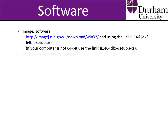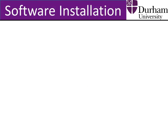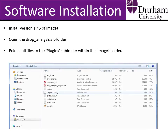You will also require the drop analysis plugin for ImageJ, which was developed by Aureline Stadler from the Biomedical Imaging Group of École Polytechnique Fédérale de Lausanne. It can be sourced from this website in the dropanalysis.zip folder in the right-hand column of the webpage. Having downloaded version 1.46 of ImageJ, install ImageJ and keep a note of where on the hard drive it has been installed to. Having downloaded the drop analysis zip folder, open the drop analysis folder from within your computer's downloads folder, and extract all the files to the plugins subfolder within the ImageJ folder.